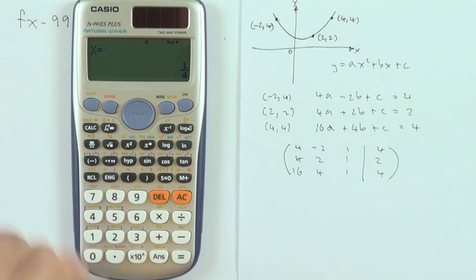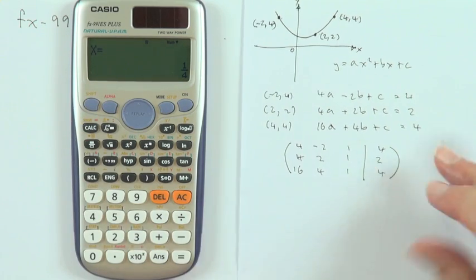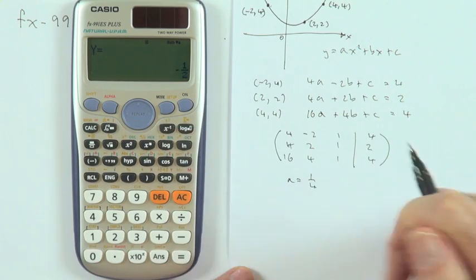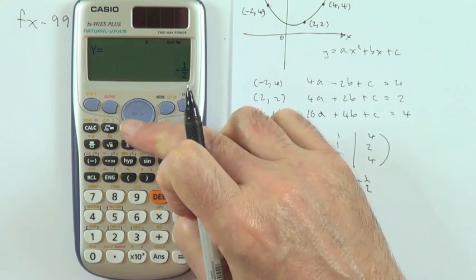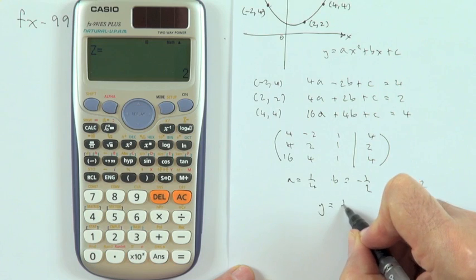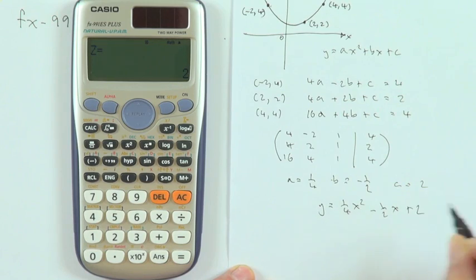Because calling the answers X, Y, and Z. So what it's saying here is then that X is a quarter. That's the same as saying that A is a quarter. So it's got A equals a quarter. Scroll down. B says Y is negative a half. And scroll down again. C is two. So there's the solution to that set of equations. So the problem would have been Y equals a quarter X squared minus a half X plus two.